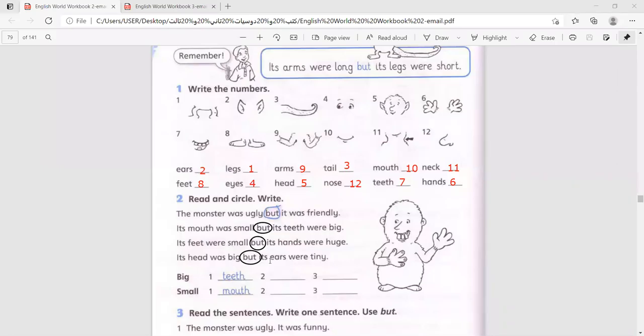So what are the things that are big? We have the teeth and we also have the hands. Huge means big. And we also have the head.